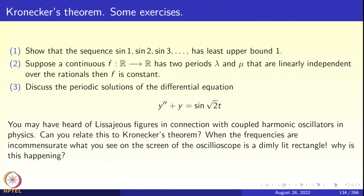Consider the sequence sin 1, sin 2, sin 3, … The sequence is clearly bounded above by 1, but how do you know that 1 is the least upper bound? Here 1, 2, 3, etc. are measured in radians, and sin 1, sin 2, sin 3 are quite intractable as far as computation is concerned. It is in fact true that 1 is the supremum of the sequence {sin n}, and to prove this rigorously you will need Kronecker's theorem.